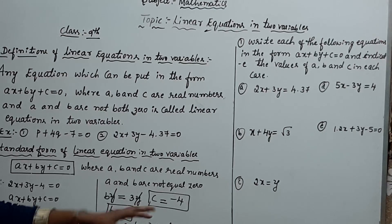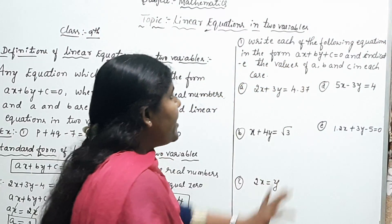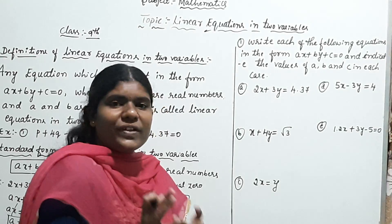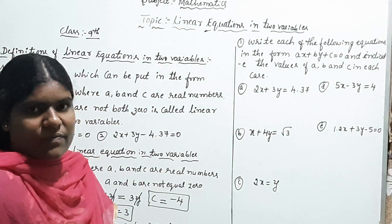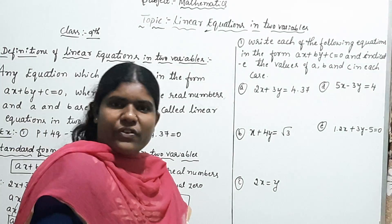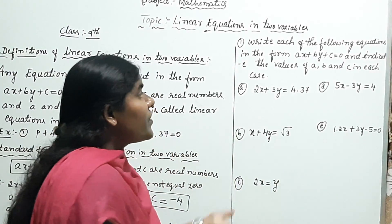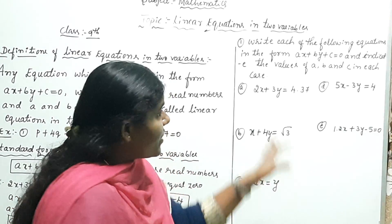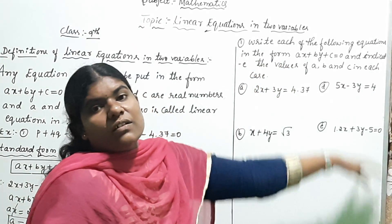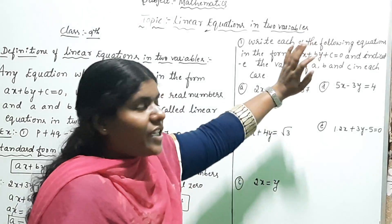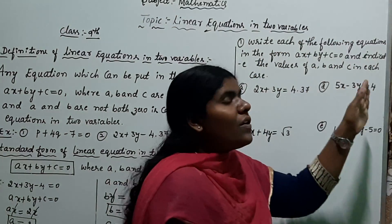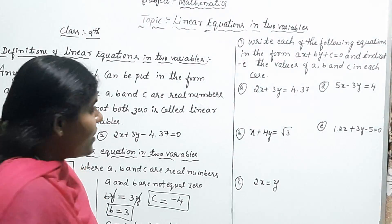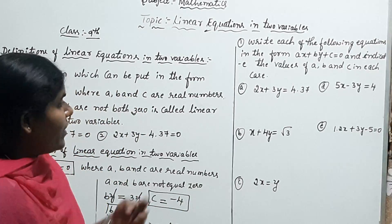Using this same method, find the next questions. Write each of the following equations in the form AX plus BY plus C equals zero and indicate the value of A, B, and C in each case. I will consider the examples one by one and find A, B, and C values.